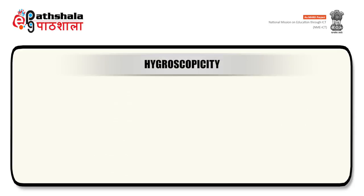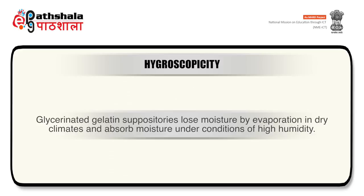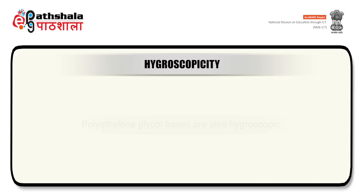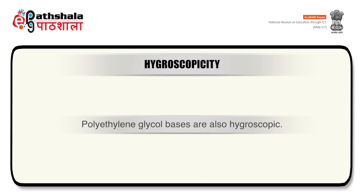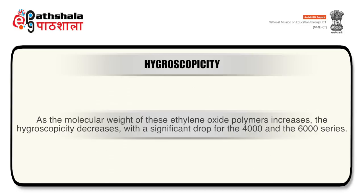The next formulation concern is hygroscopicity. Glycerinated gelatin suppositories lose moisture by evaporation in dry climates and absorb moisture under conditions of high humidity. Polyethylene glycol bases are also hygroscopic. The rate of moisture change in these bases depends not only on humidity and temperature but also on the chain length of the molecule. As the molecular weight of these bases increases, the hygroscopicity decreases, with a significant drop for the 4000 and 6000 series.